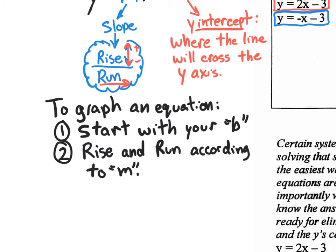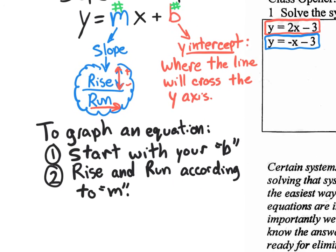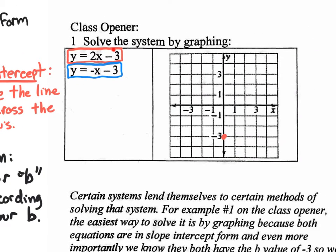When you look at the number in front of m, if it's just a number, you want it to be a fraction — rise over run. So if you had a 3, you'd put 3 over 1. Let's continue with the red equation from the class opener. The b-value is negative 3, so we plot that on the y-axis. Then we look at the slope: it's 2, so we write it as 2 over 1.